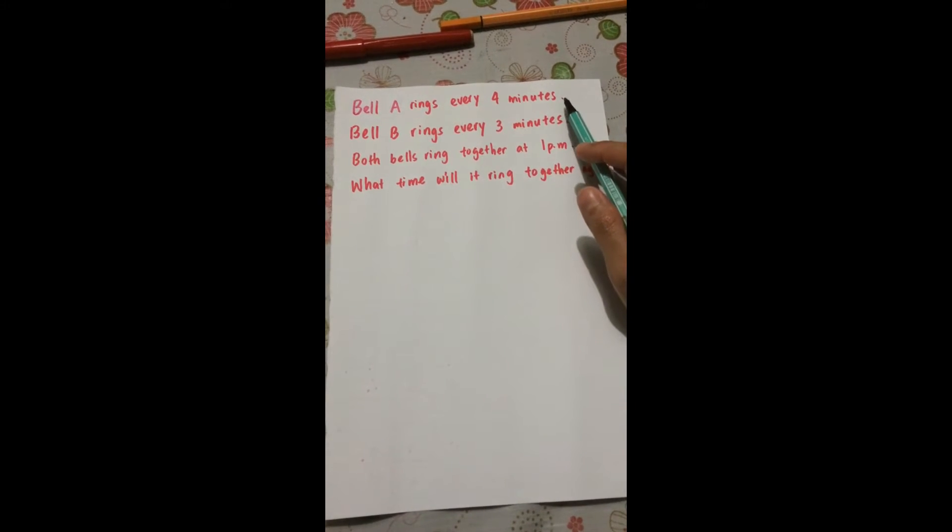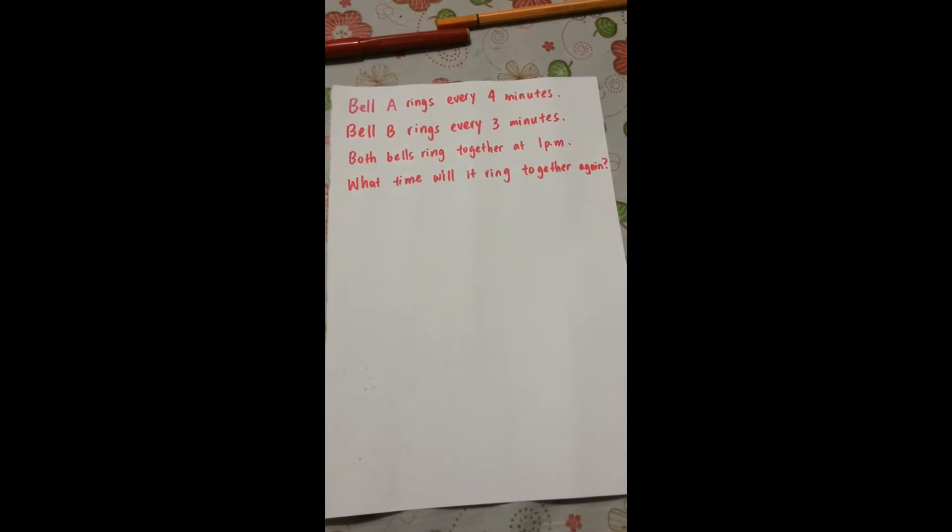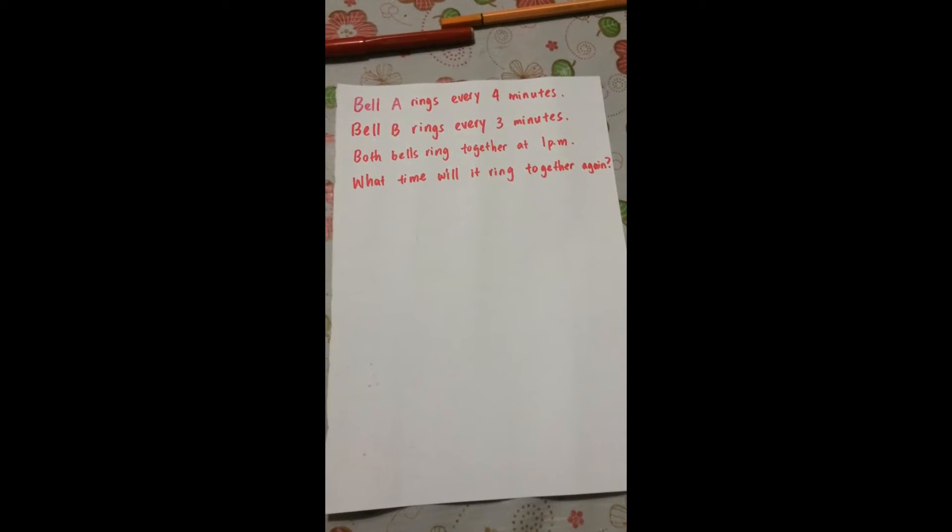What you want to do is list down the times that bell A rings, and list down the times that bell B rings. And then you can find the common time that they both ring together.